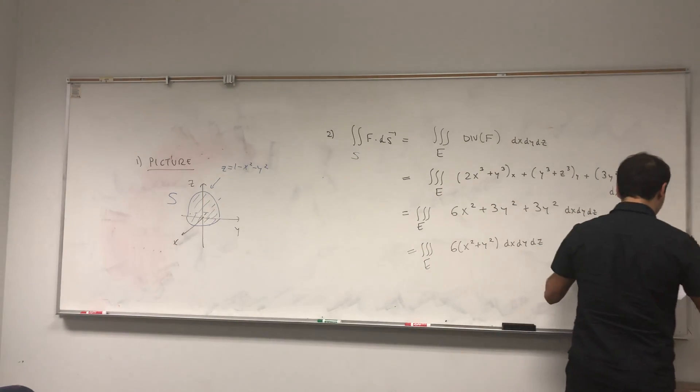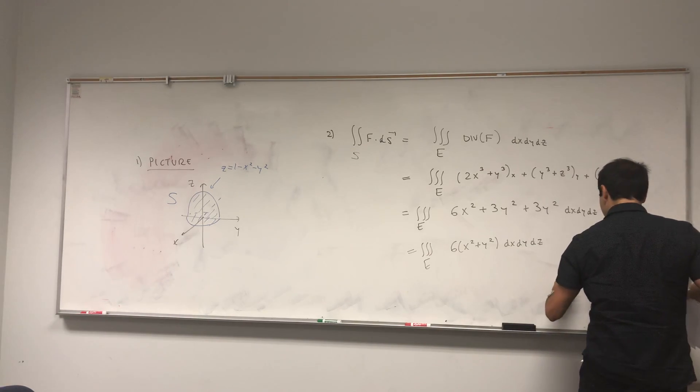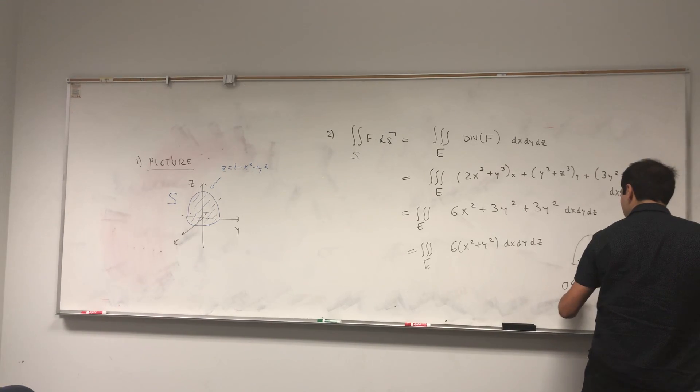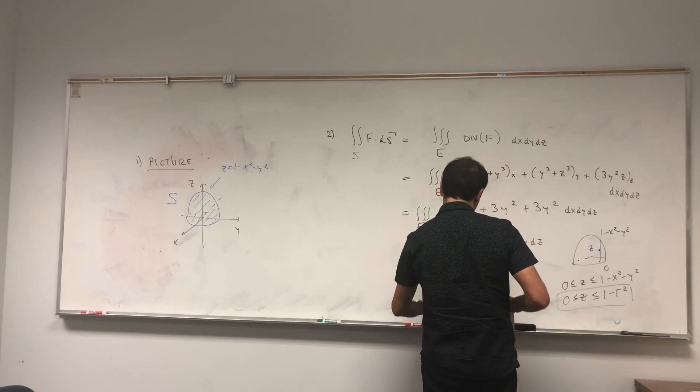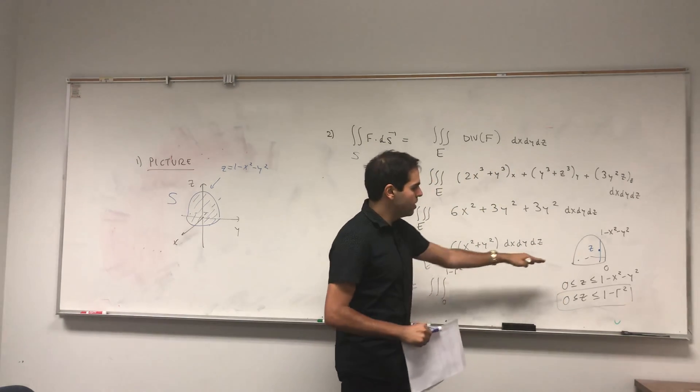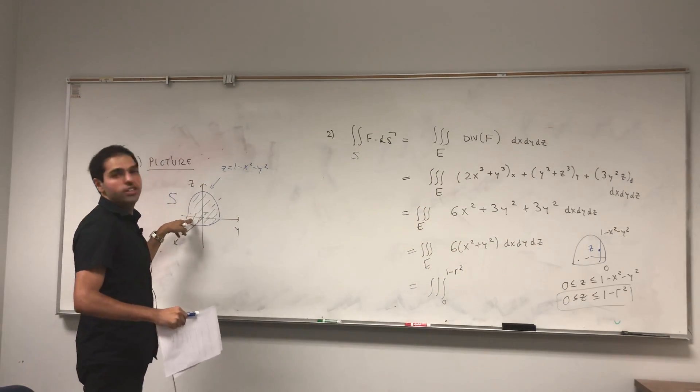What do you do? Well, z is between bigger and smaller. Notice the bigger function is 1 - x² - y², the smaller function is 0. So z is between 0 and 1 - x² - y². Transform this into r: 1 - r². That's your first bound.